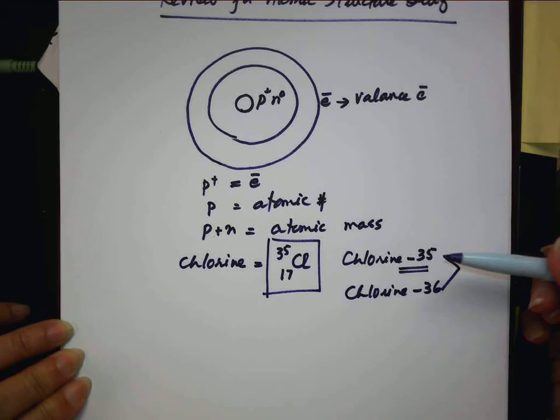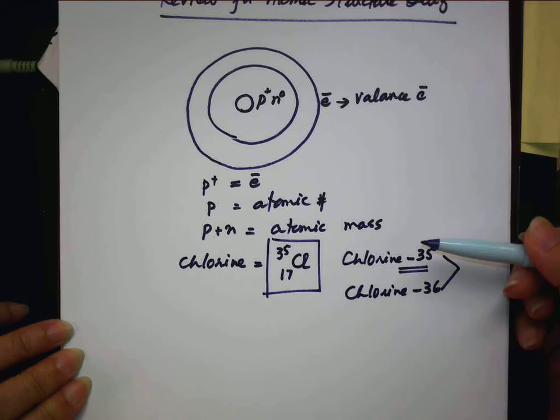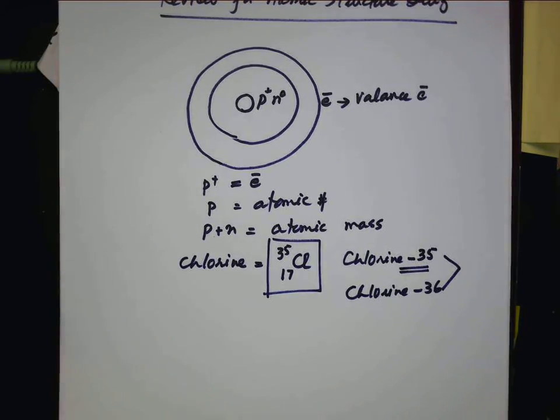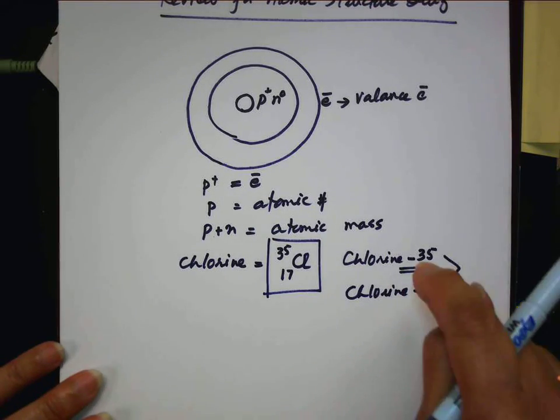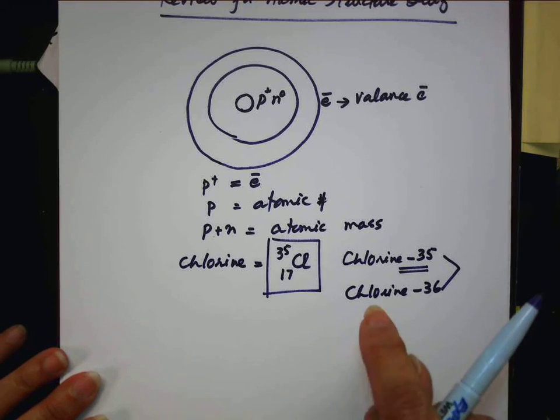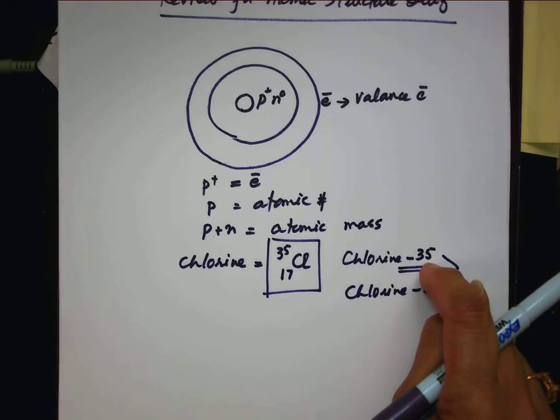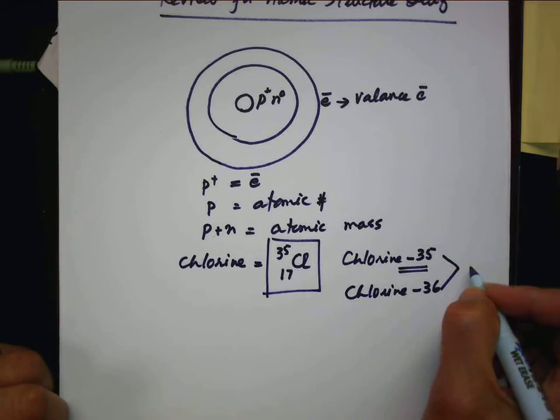So you do not expect or you do not think that every atom of chlorine should have 35 from the periodic table. From the periodic table is the average of all the isotopes. Average it out and they put it in the periodic table. But if you take another chlorine, it can be 35. Another one, it can be 34. All the average is 35 point something. So these are isotopes.